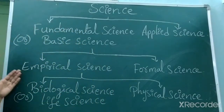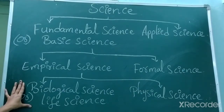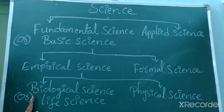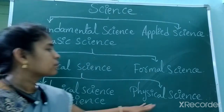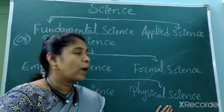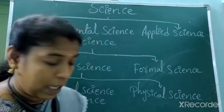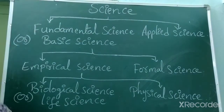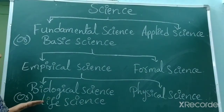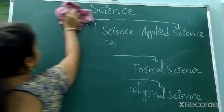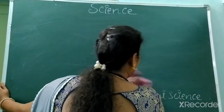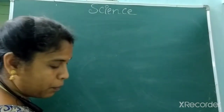Coming back, empirical science is passed into biological science. Why is biological science also called life science? Because biology itself means study of living. So biological science means study about living things — that is why it is called life science. The next one is physical science, where we study about non-living things. This biological science is categorized into three branches, which we will look at further down.